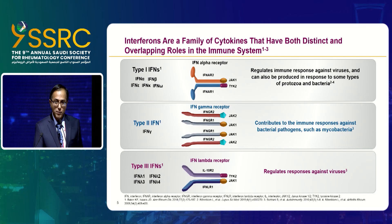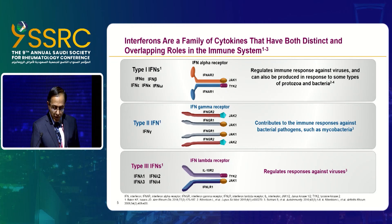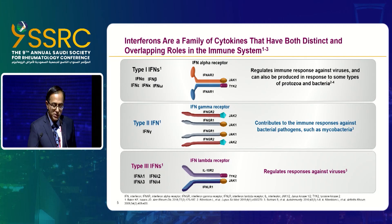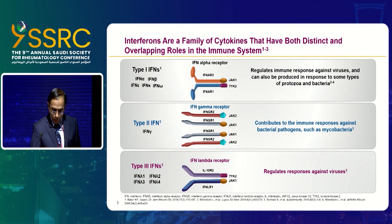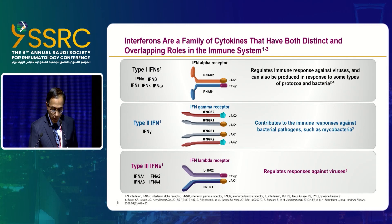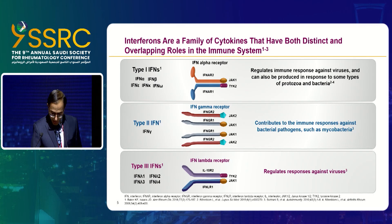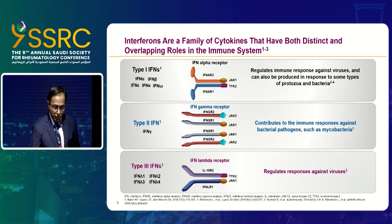So it is good for us to have interferon in our system. Interferons have three different types: Type 1 interferon, Type 2 is interferon gamma, and Type 3 is interferon lambda. Type 1 interferon works through the JAK1-TYK2 pathway, while Type 2 and Type 3 work through the JAK1 and JAK2 pathway — though Type 2 and Type 3 also involve JAK1 and TYK2, just like Type 1 interferon.